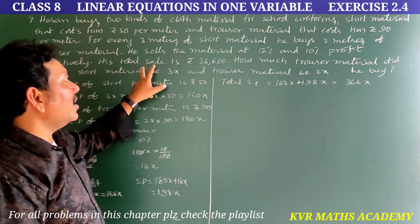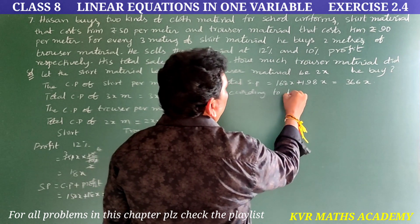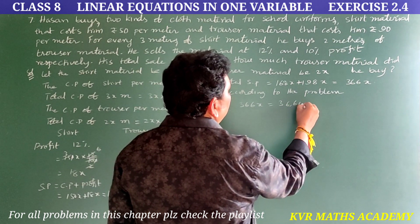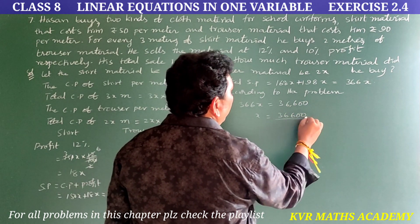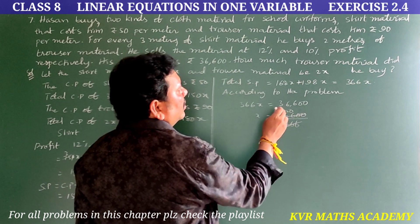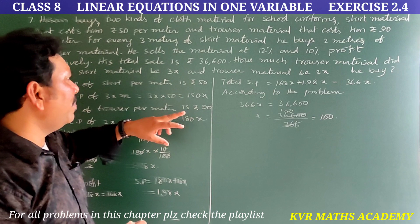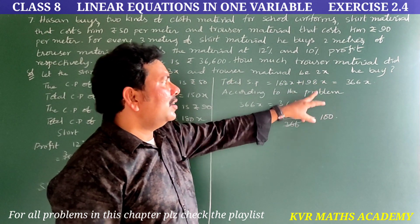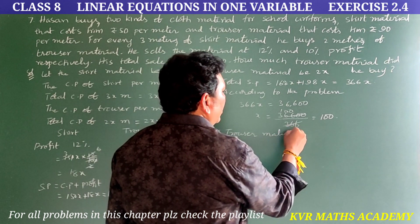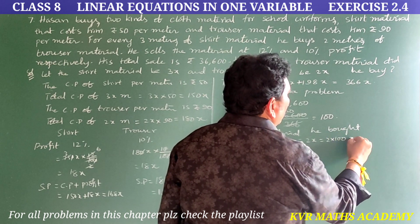We have total SP as 366x, and according to the problem the total sale is rupees 36,600. So 366x equals 36,600. Therefore x equals 36,600 divided by 366, which equals 100. The question asks how much trouser material he bought. Trouser material is 2x, which is 2 into 100, equals 200 meters.